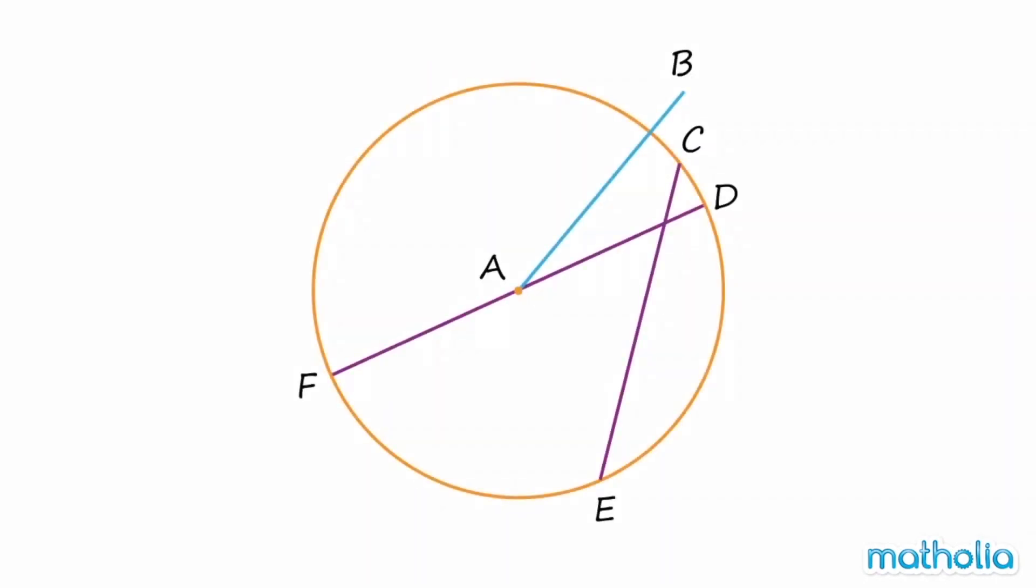Let's identify a diameter in this circle. Start with the line AB. AB is a straight line but it does not pass through the centre of the circle and its endpoints are not on the circle, so it's not a diameter.